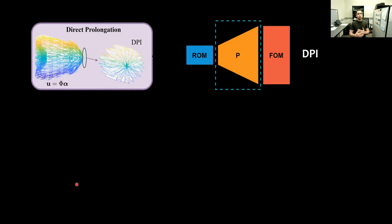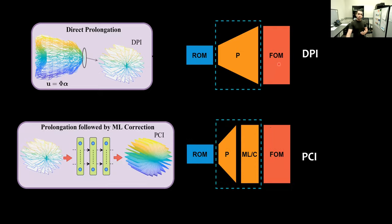The first approach to couple the ROM and FOM is what we call direct prolongation, which means that we solve the ROM in the reduced space, then we do the reconstruction or prolongation to the full space using only the information contained in phi, sketched here by this sharp or coarse solution. This solution is then passed to the full-order model of the right part. Of course, we would like to interfere here and improve this coupling if we are not happy with it.